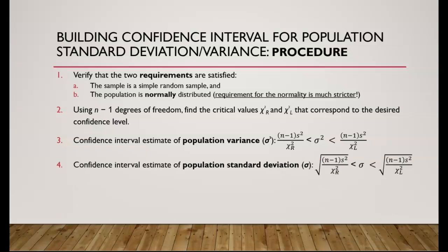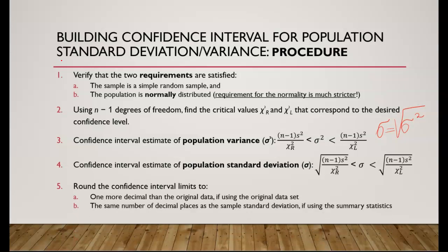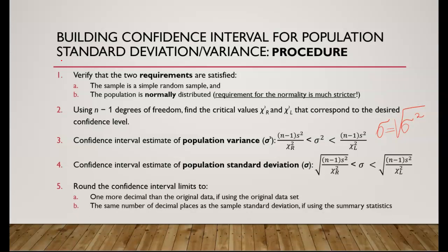To build a confidence interval estimate of population standard deviation, we just take square roots from both limits, because standard deviation is equal to the square root of the variance. Lastly, round the confidence interval limits to one more decimal than the original data if using the original data set, or the same number of decimal places as the sample standard deviation if using summary statistics.